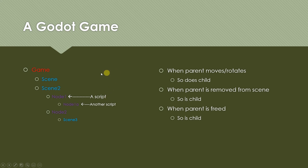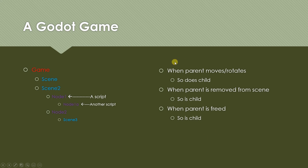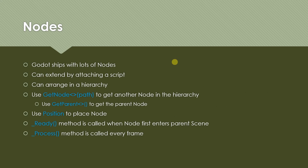Scenes and nodes are arranged in a hierarchy — a node can have a parent node, so you have parents and children. Three things to remember about this relationship: when a parent moves or rotates, so does the child; when a parent is removed from a scene, so is the child; and when a parent is freed — in other words deleted — so is the child. Remember these, and I will keep reminding you throughout this tutorial series.